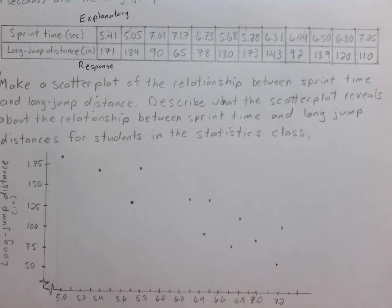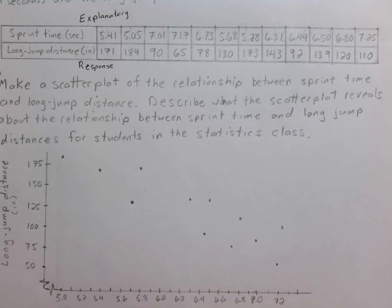So that is our scatter plot. We have the label, scales, and the points included. The second thing that they ask us to do is to describe.